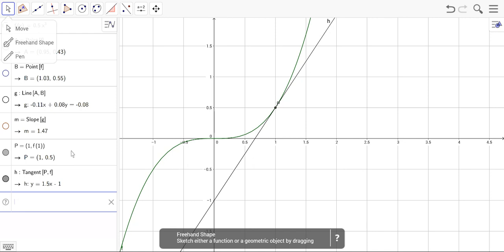This means that the slope of this tangent line is 1.5, so the instantaneous rate of change is 1.5, which is what we expected because we found the approximate instantaneous rate of change using the secant lines.